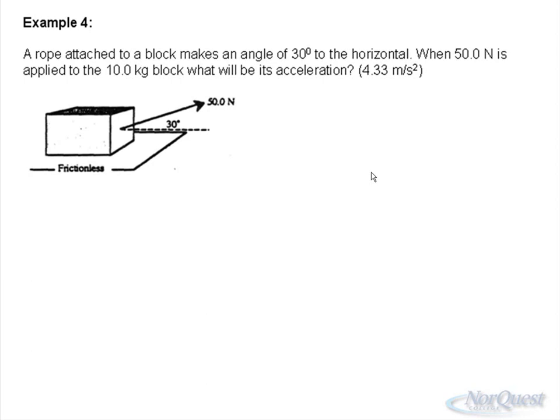We have a rope attached to a block that makes an angle of 30 degrees to the horizontal. When 50 newtons is applied to the block, what is its acceleration?